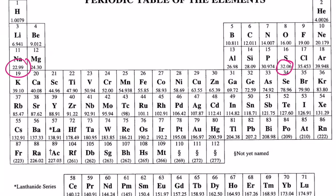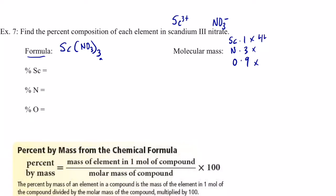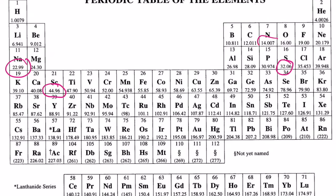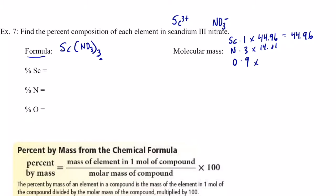Let's find the molecular weight. Scandium's atomic mass is 44.96 grams per mole. Nitrogen's atomic mass is 14.01, so 14.01 times 3 gives 42.03. Oxygen's atomic mass is 16.00, and 9 times 16.00 gives 144.00. Adding those up: 44.96 + 42.03 + 144.00 = 230.99 grams per mole.